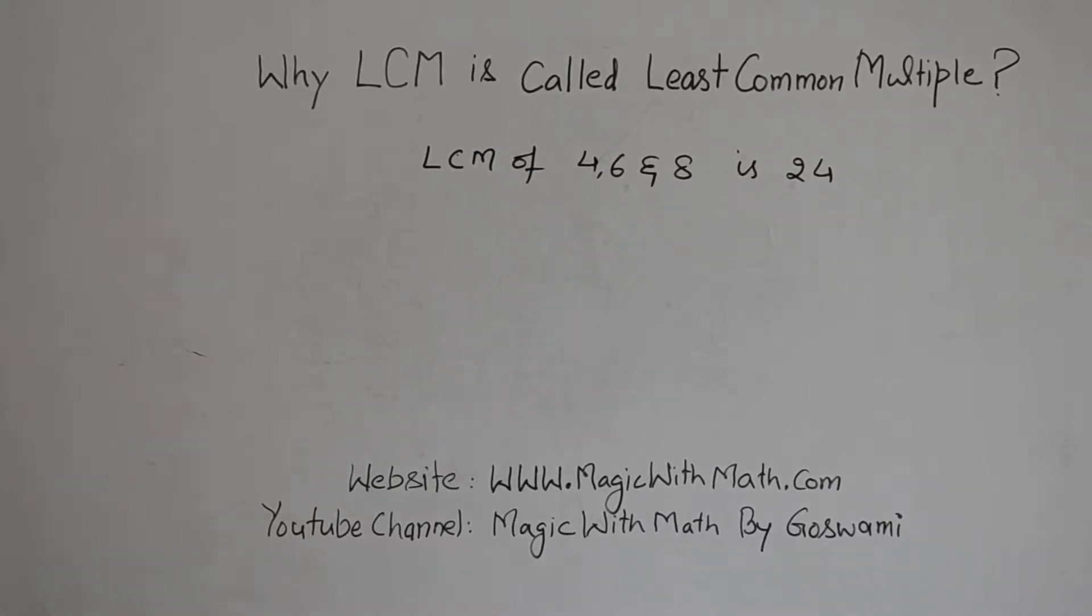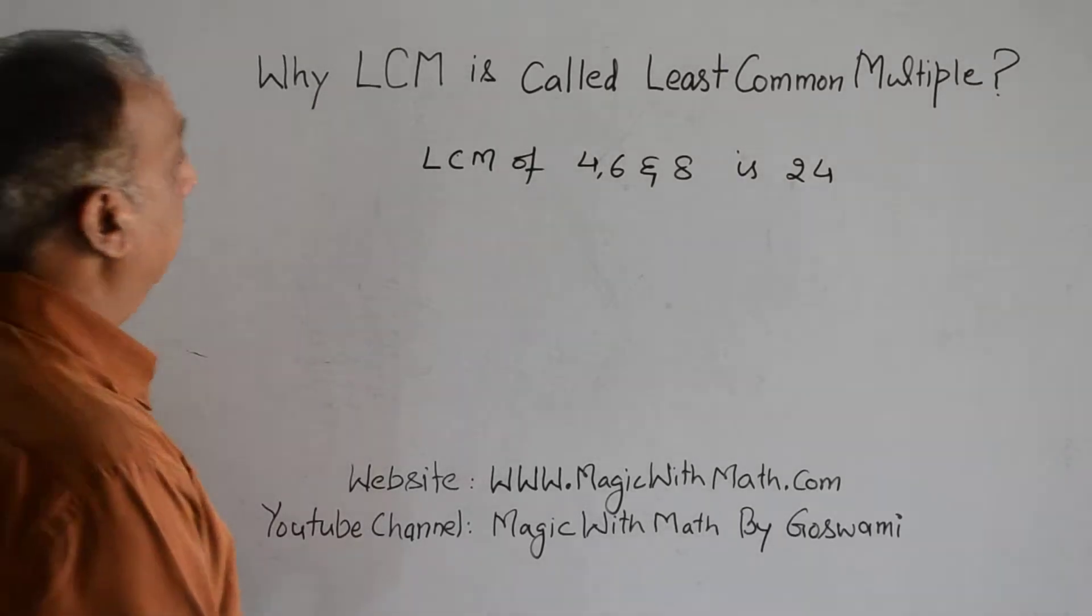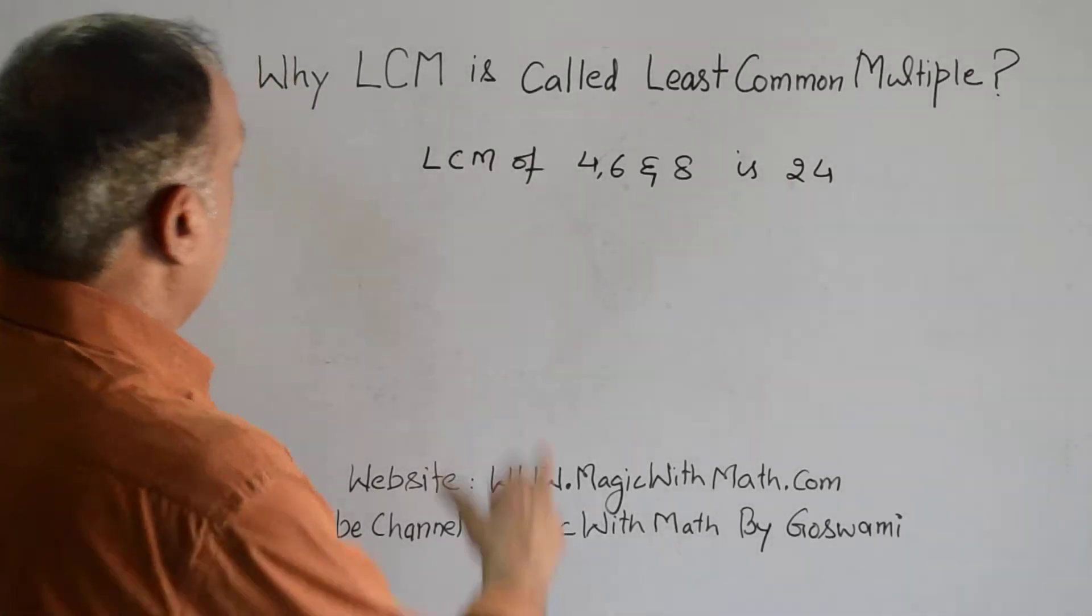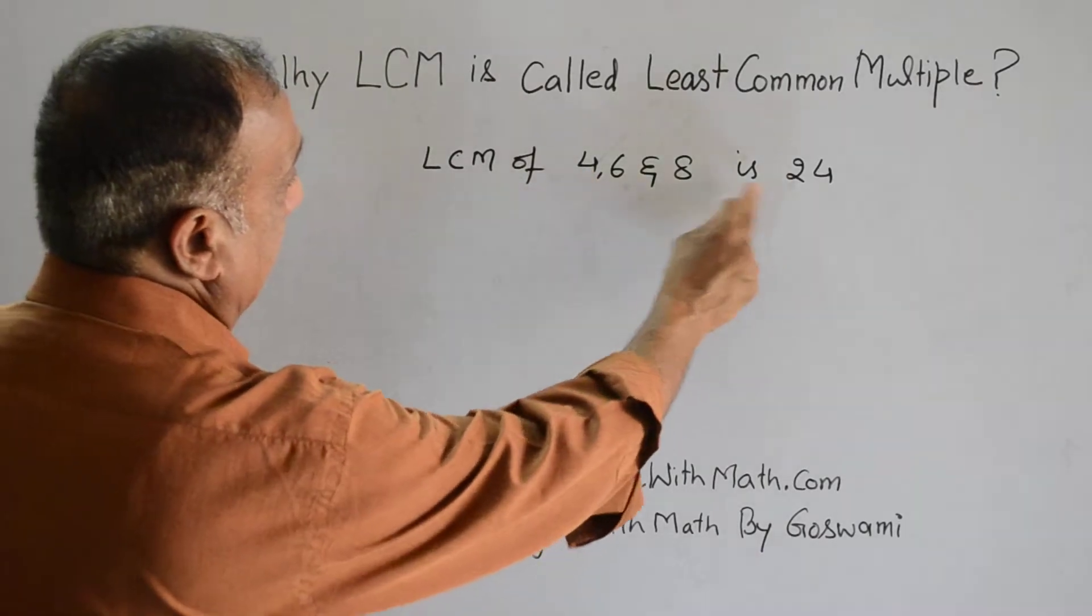Why is LCM called least common multiple? LCM of 4, 6, and 8 is 24.